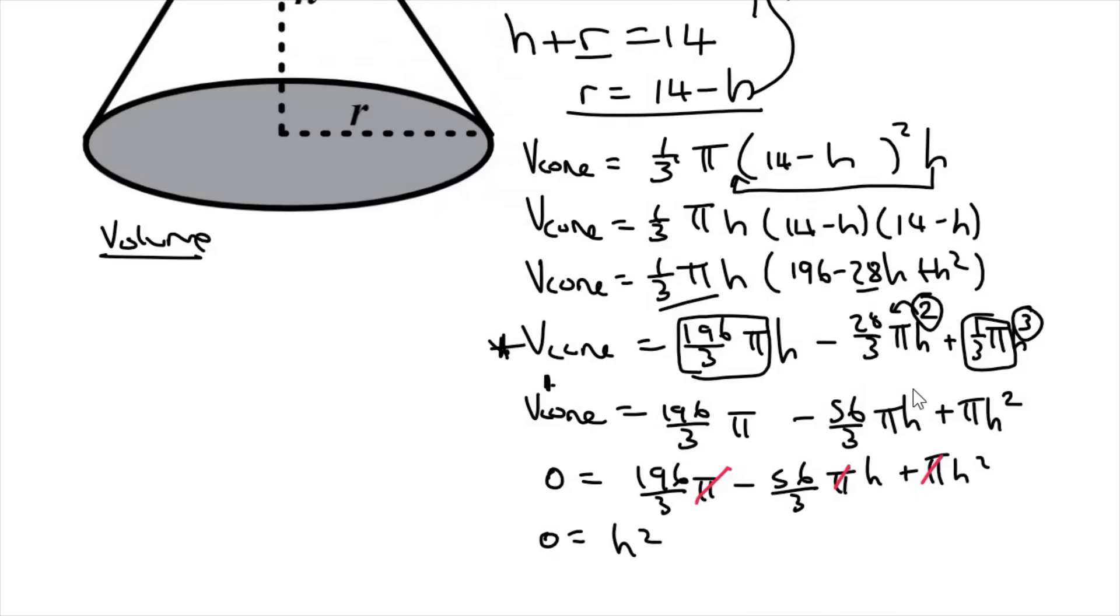And so now what we have is zero. And I'm just going to put the h squared in the front. Then we've got 56 over 3 h. And then we've got 196 over 3. Now here is a quadratic. So you could, if you wanted to, plug this directly into the formula.